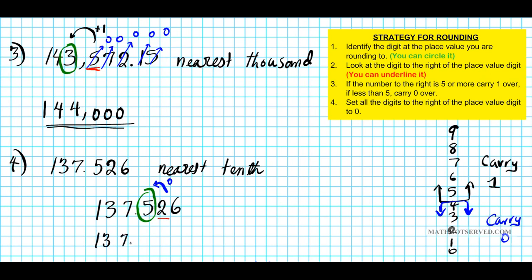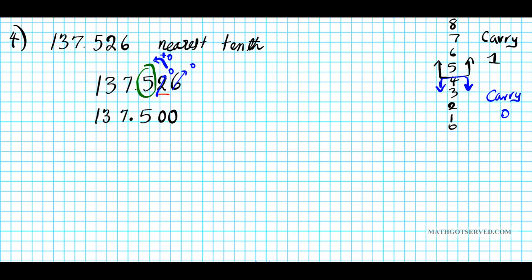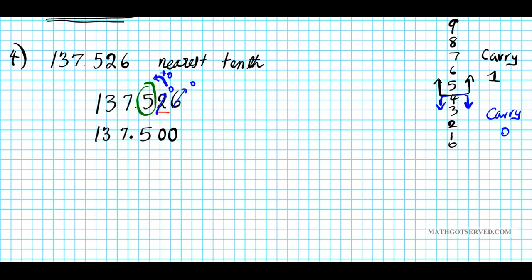The numbers to the left of the place value digit remain unchanged. Now, you look at the list: if the number is less than 5, you carry 0; if it's 5, 6, 7, 8, 9 — 5 or greater — you carry 1. Since 2 is less than 5, we carry 0. So 5 plus 0, the number remains unchanged: 5. What happens to every digit to the right of the place value digit? We set them all to 0. So 137.526 rounded to the nearest tenth is 137.5. This is your final answer.